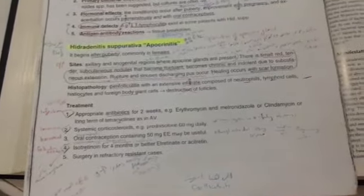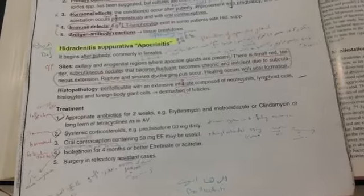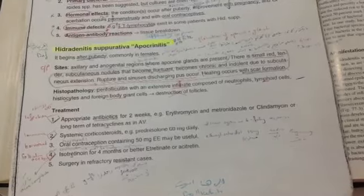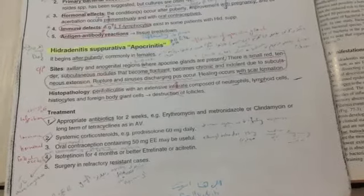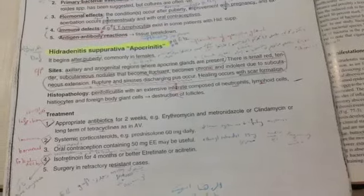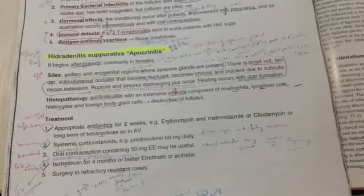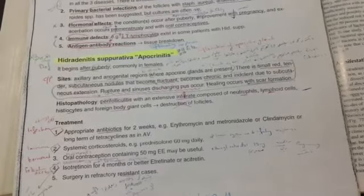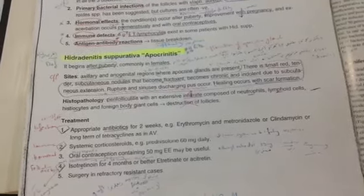The hidradenitis suppurativa: it begins after puberty, commonly in females, the sites of axillary and anogenital region, the buttocks, where the apocrine glands are present. And there is a small, red, tender, subcutaneous nodules that become fluctuant and become chronic and indolent due to subcutaneous extension, rupture, and sinus discharging pus occurs, healing occurs with scar formation. The histopathology: perifolliculitis with extensive infiltrate composed of neutrophils, lymphoid cells, histiocytes, and foreign body giant cells leading to destruction of follicles.